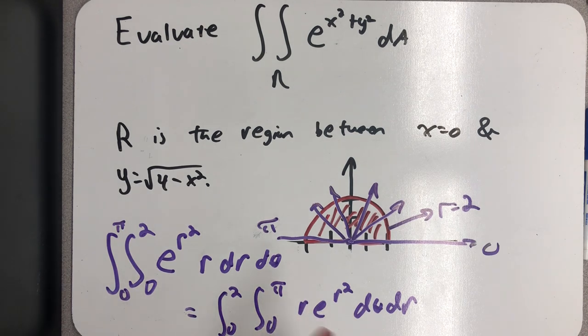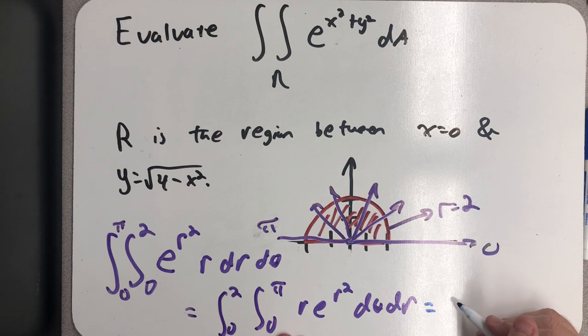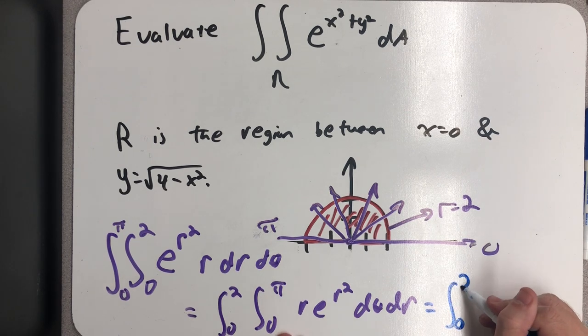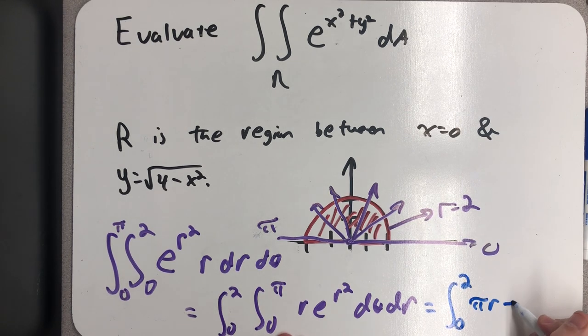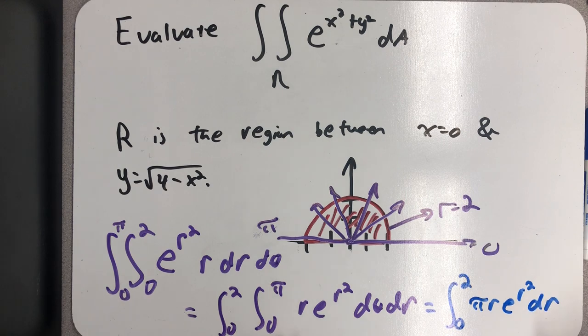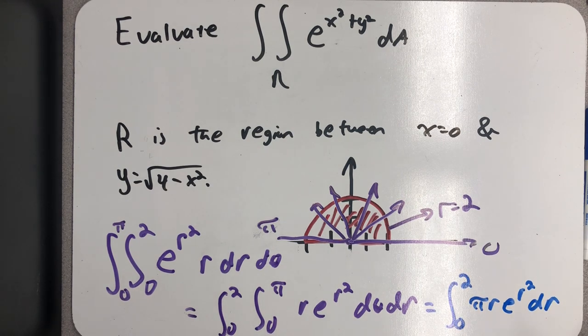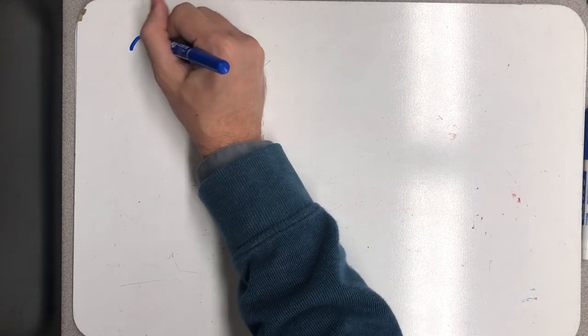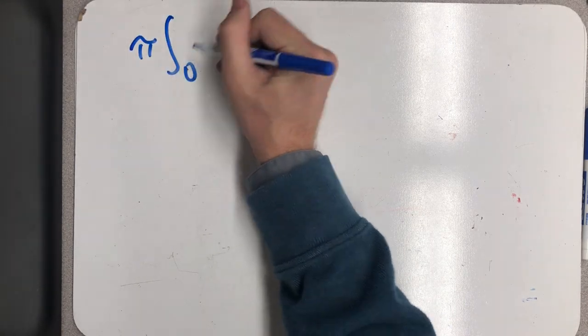And now all I have is a substitution problem to work. Factor that pi out front.